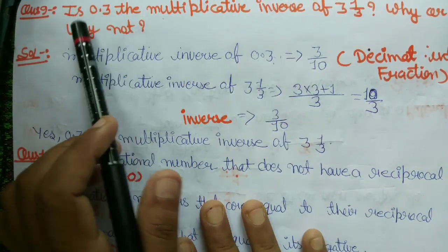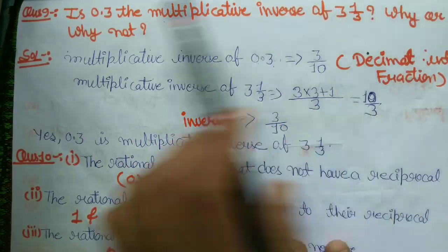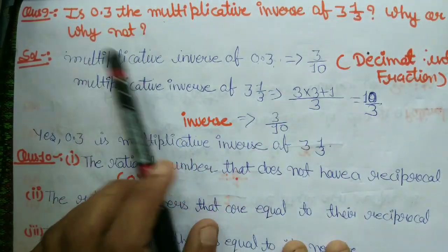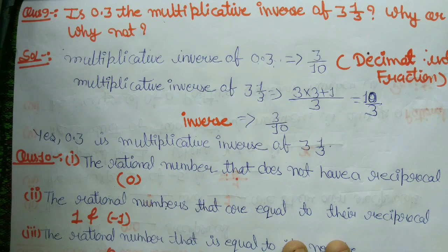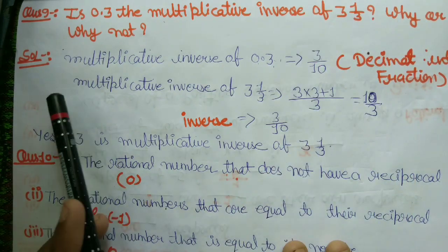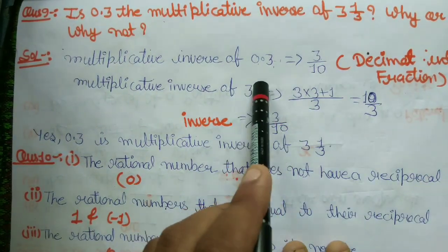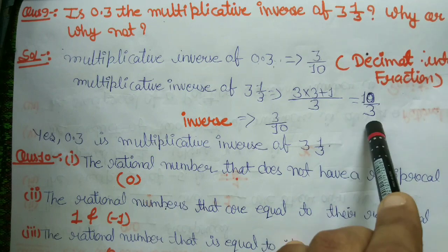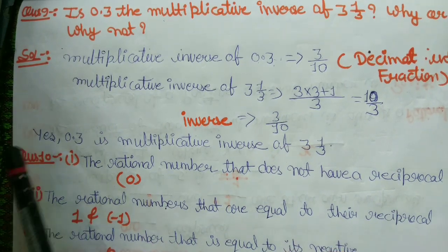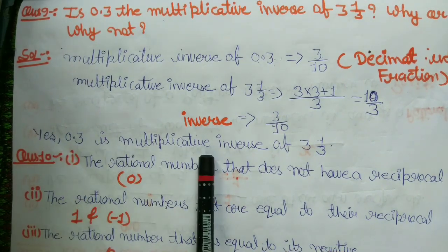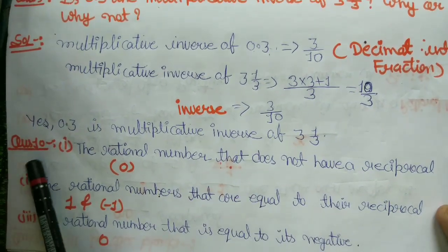Question number 9: Is 0.3 a multiplicative inverse of 3 and 1 by 3? Why or why not? 0.3 as a rational number is 3 by 10. Multiplicative inverse of 3 and 1 by 3: convert to improper fraction — 10 upon 3 — so its multiplicative inverse is 3 by 10. Yes, 0.3 is the multiplicative inverse of 3 and 1 by 3.